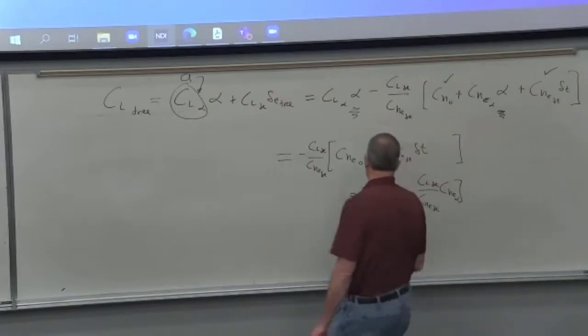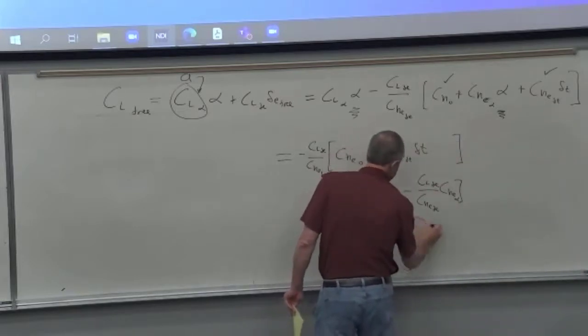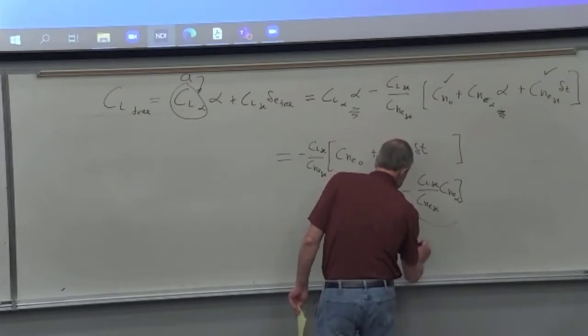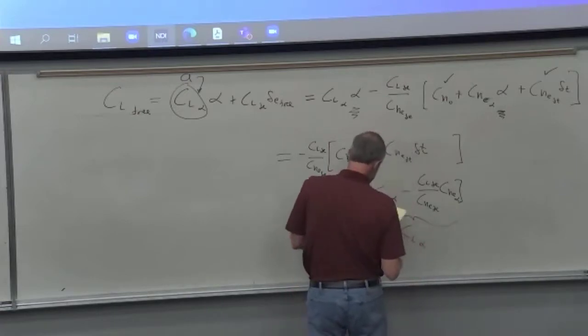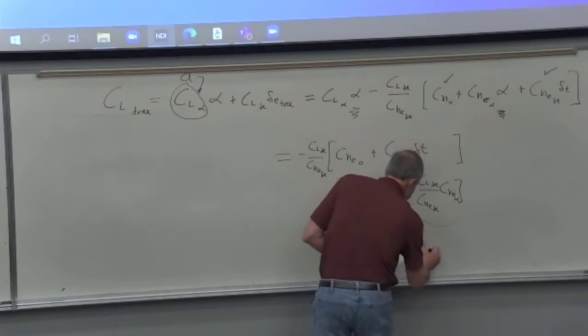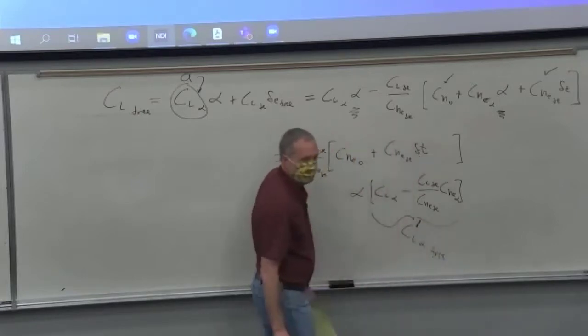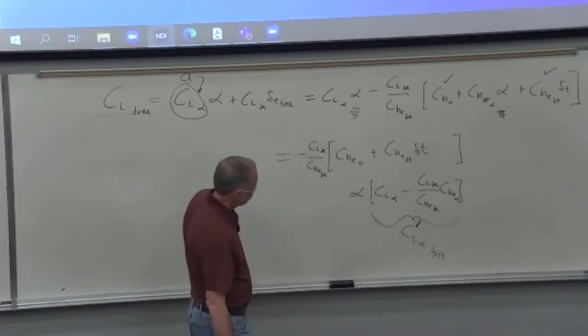And so this is the new lift curve slope for the airplane. So with the stick free, we're going to put a prime on it so it looks different. So that's the lift curve slope of the airplane with the stick free. And it changed, didn't it? Probably not by a whole lot.